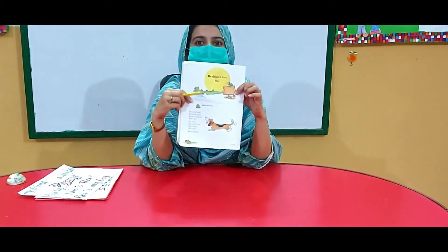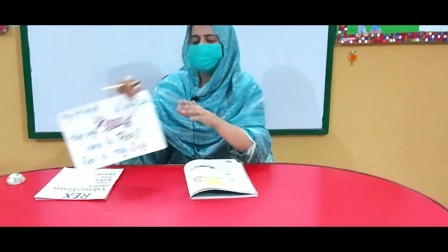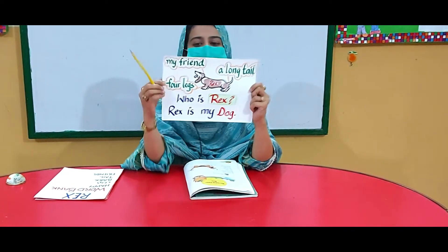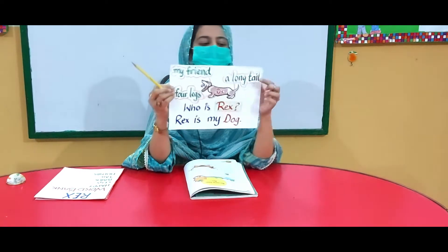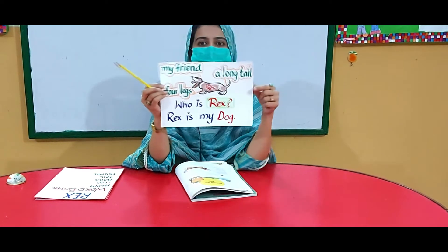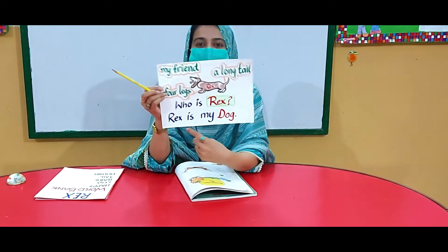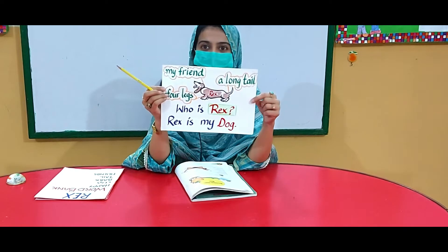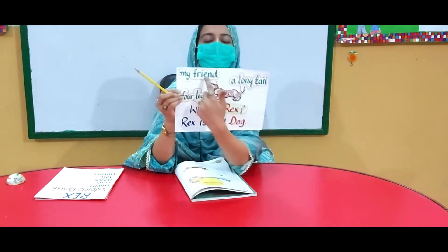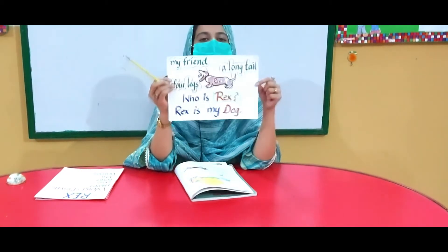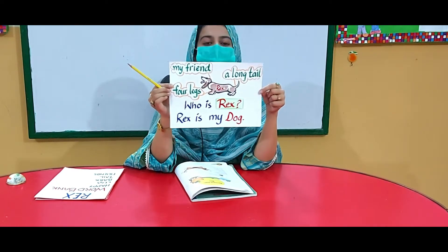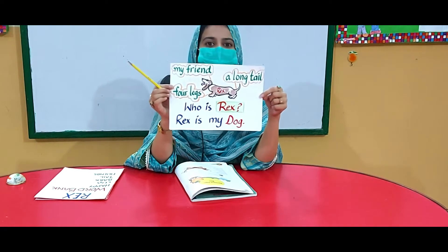The first lesson is Rex. Can you guess what this is? He is my friend. He has a long tail and four legs. His name is Rex. Who is he? Rex is my dog. This is an animal that barks, has four legs, a long tail, and he's my friend. What's the name of my dog? It's Rex. Now let's start reading.